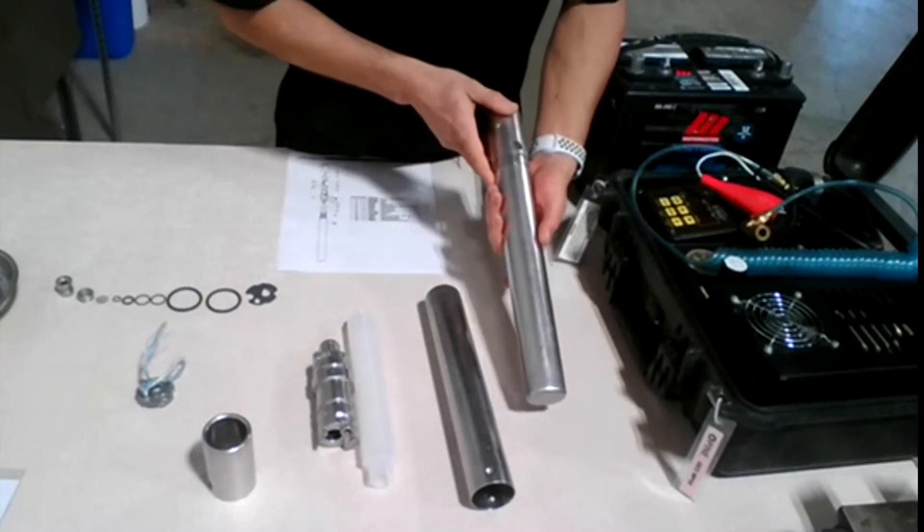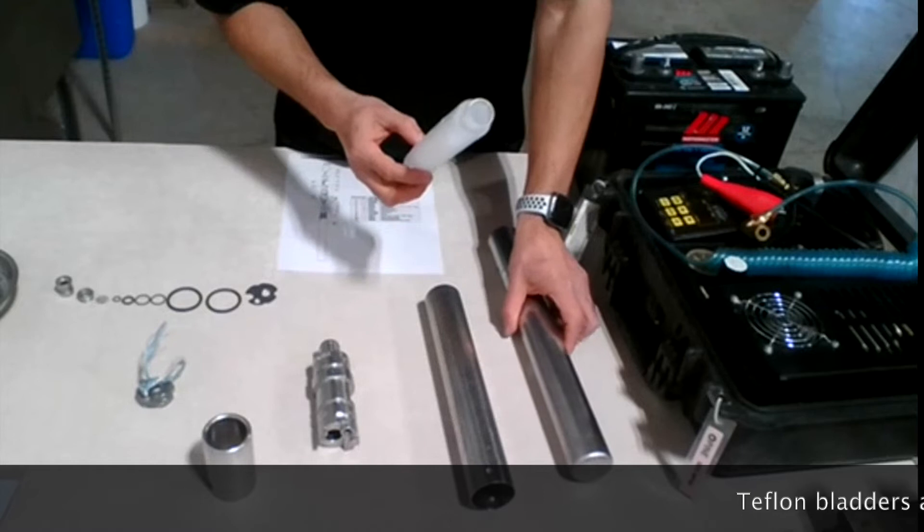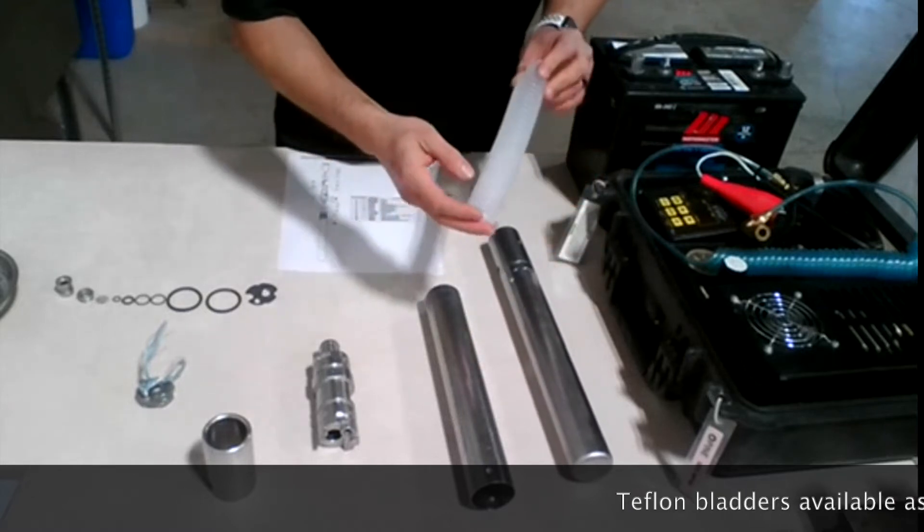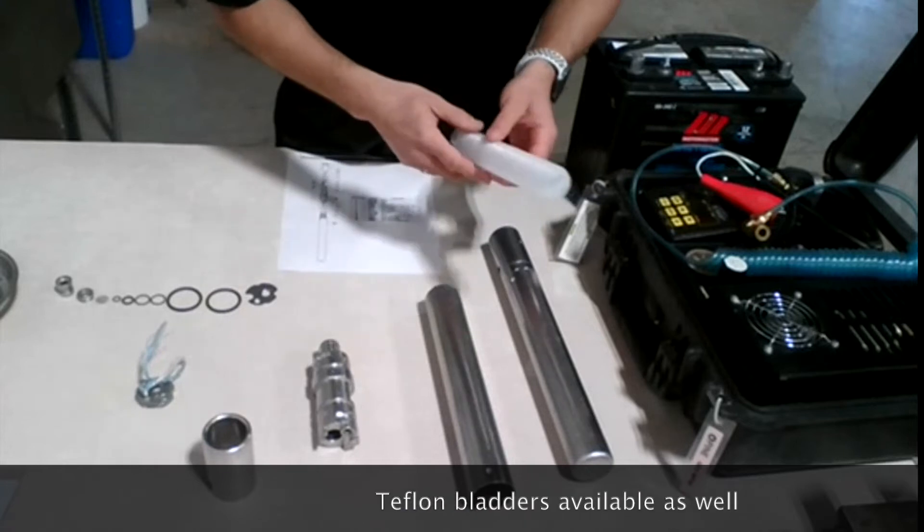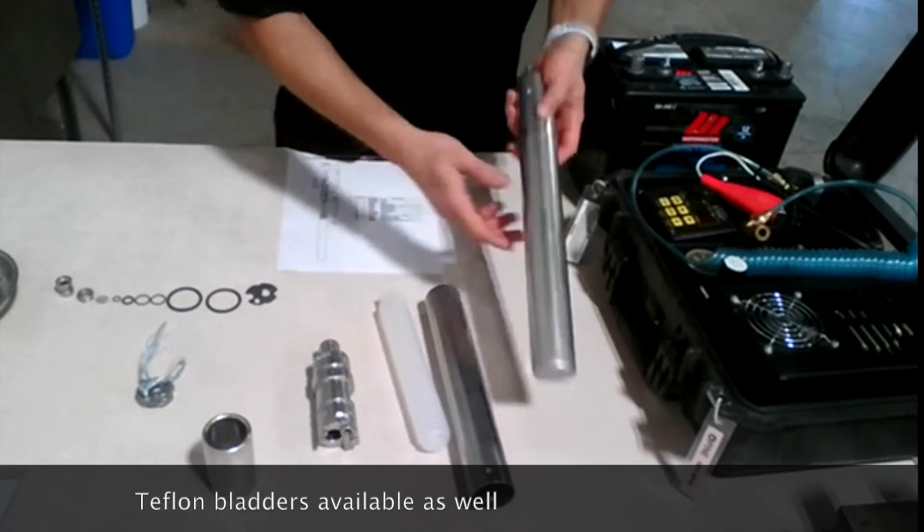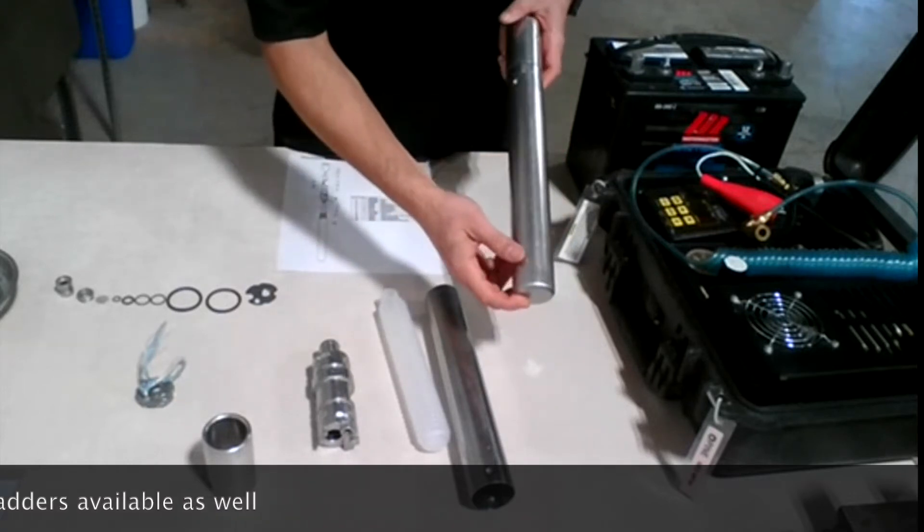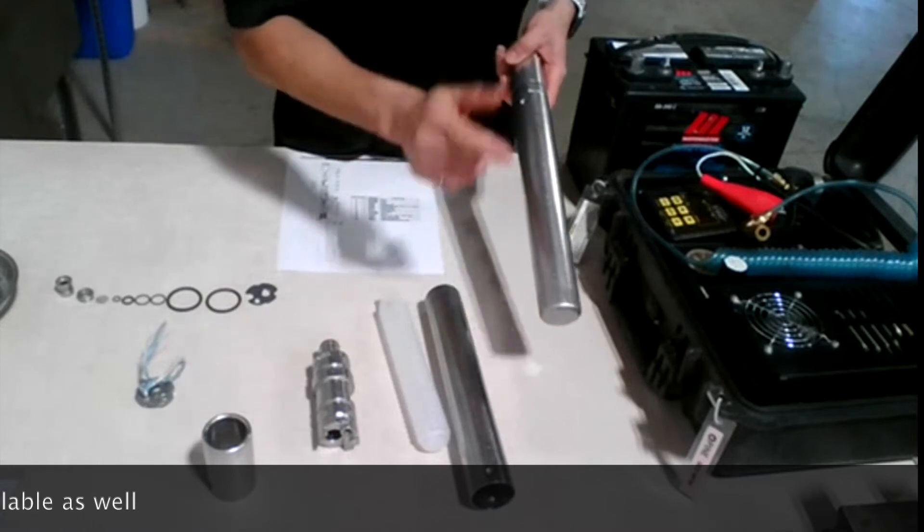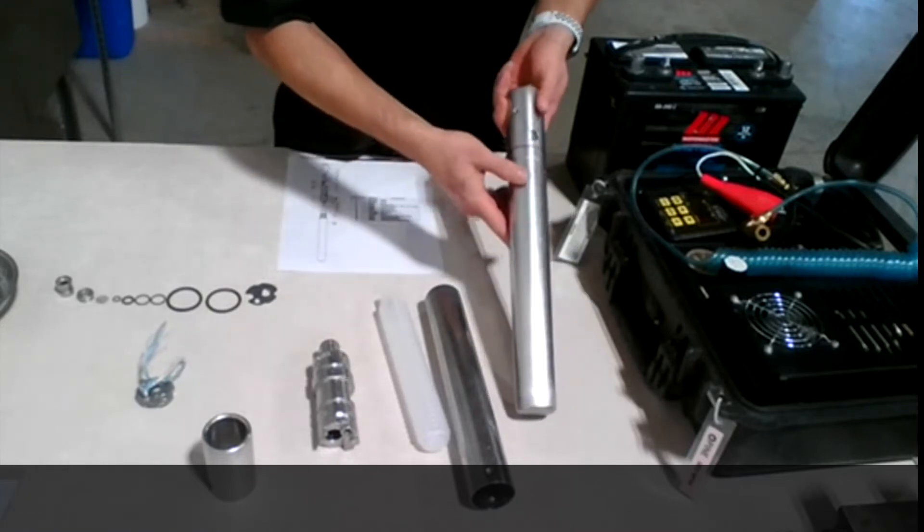And also because this one has a bladder pump, so it has minimal agitated sample. So your sample that you bring back to the surface is less agitated with this type of pump, which is really good. And this pump is actually, as you can see, it's only 14.5 inch long. So that's around 38 centimeters long.